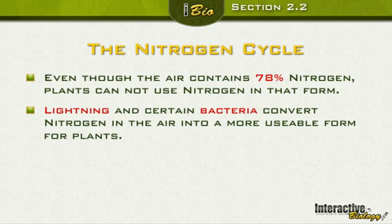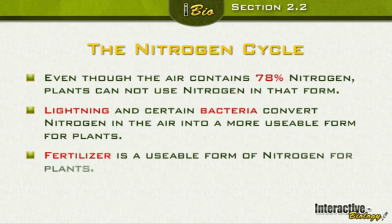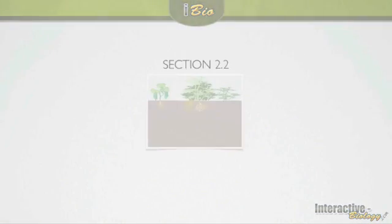We have nitrogen in the air, lightning happening — sometimes we wonder why lightning happens, but it converts that nitrogen into a form so that plants can use it. In some cases there's not enough nitrogen in the soil, so people use fertilizer, and one of the main components of fertilizer is nitrogen. We're giving the plants nitrogen artificially so the plant can use it and do what needs to be done.